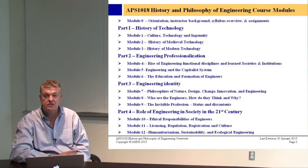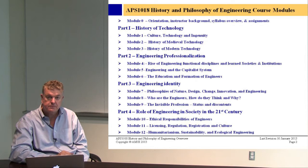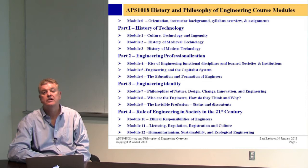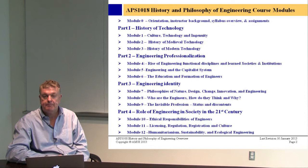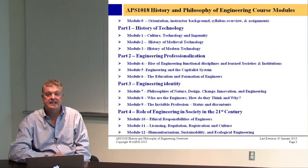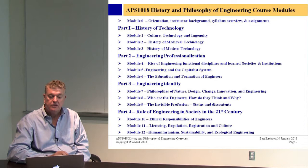Part two focuses on engineering professionalization — how engineering developed in the 19th and 20th centuries into a robust profession and how functional disciplines emerged. In module five we'll talk about engineering and the capitalist system. In the 1920s and 30s there were reformists who tried to get engineers to challenge the capitalist system, because they were the true drivers of industry with all the intellectual power and knowledge. The reformers argued that engineers were being exploited — mere wage slaves. So we'll look at the role of engineers in the capitalist system.